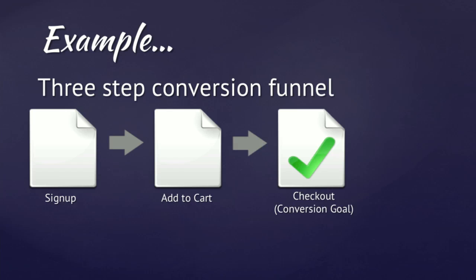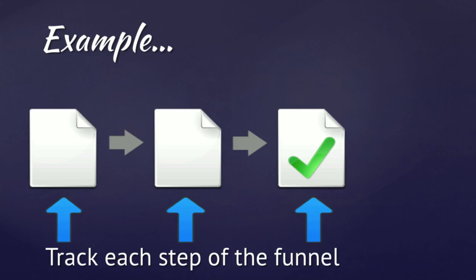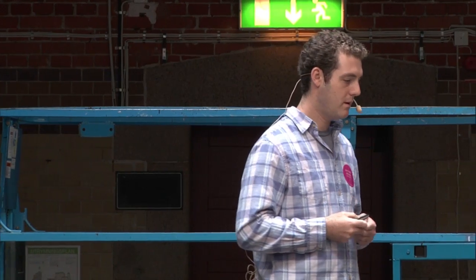Here's an e-commerce site with three steps in the conversion funnel. Step one: a user signs up. Step two: they add a product to their cart. Step three: they check out — they buy something. The checkout is the conversion goal. We need to be able to track every single step in the funnel, see how many users enter the funnel, where they potentially drop off, and how many of them actually complete the funnel. We also need to be able to split test. For example, if we have a blue buy button on our checkout page and we want to know if a red buy button would get more people to convert, we need the tools in place to test that.